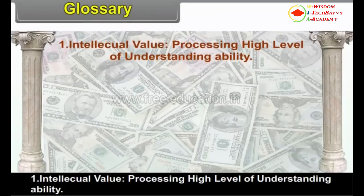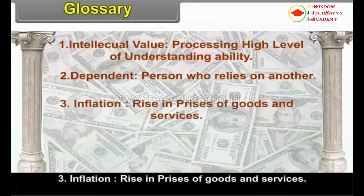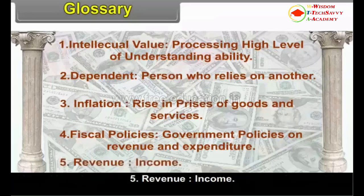Glossary: Intellectual value — processing a high level of understanding and ability. Dependent — a person who relies on another. Inflation — rise in prices of goods and services. Fiscal policies — government policies on revenue and expenditure. Revenue — income.